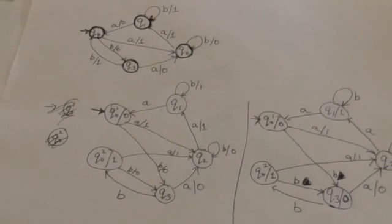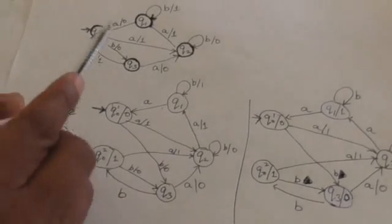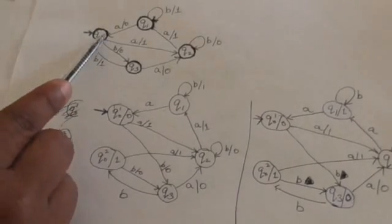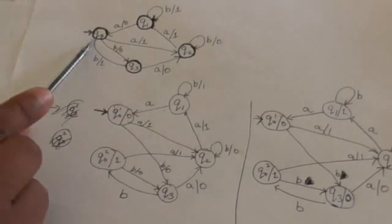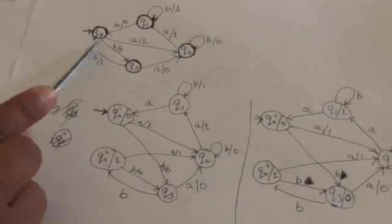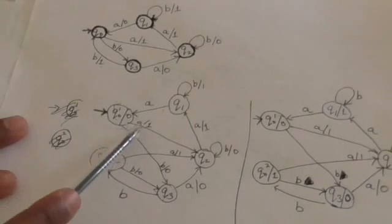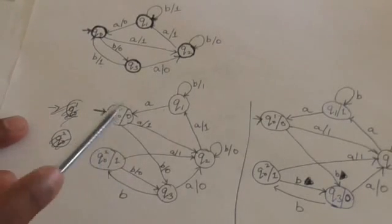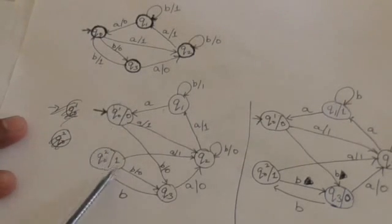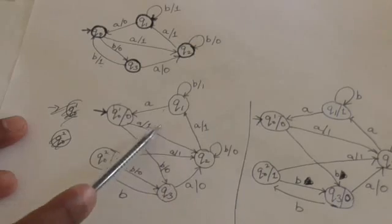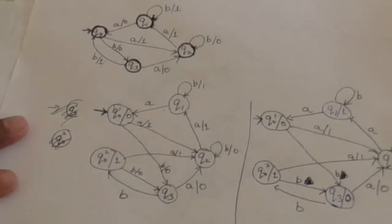Outgoing edges will remain as they are. From Q0 there is an outgoing edge to Q2 and one edge to Q3, so both new versions of Q0 will have these two outgoing edges.